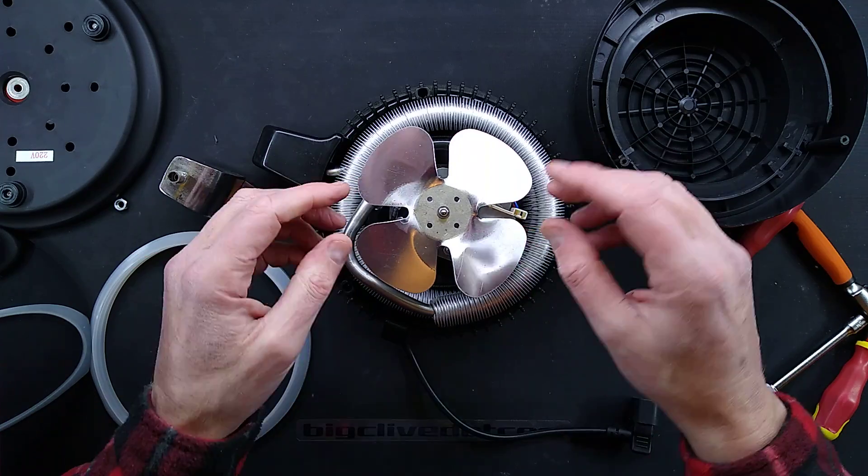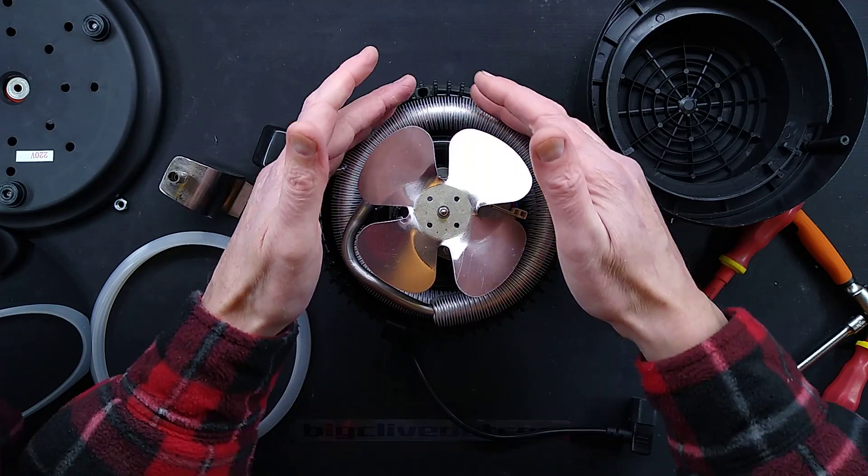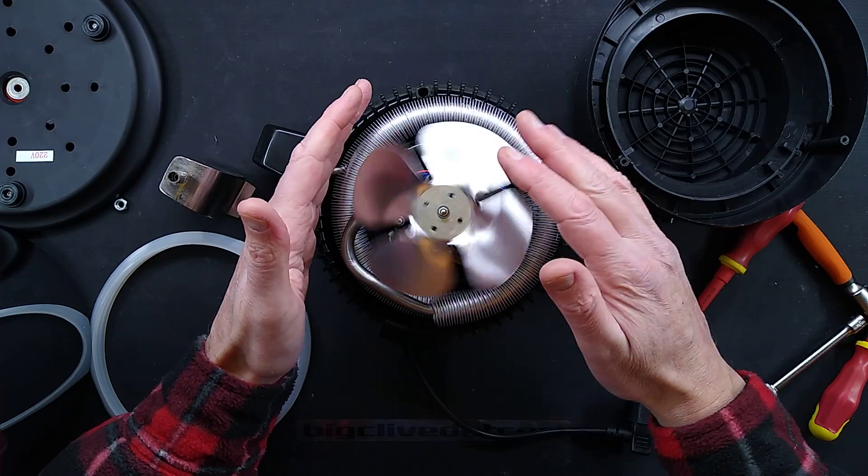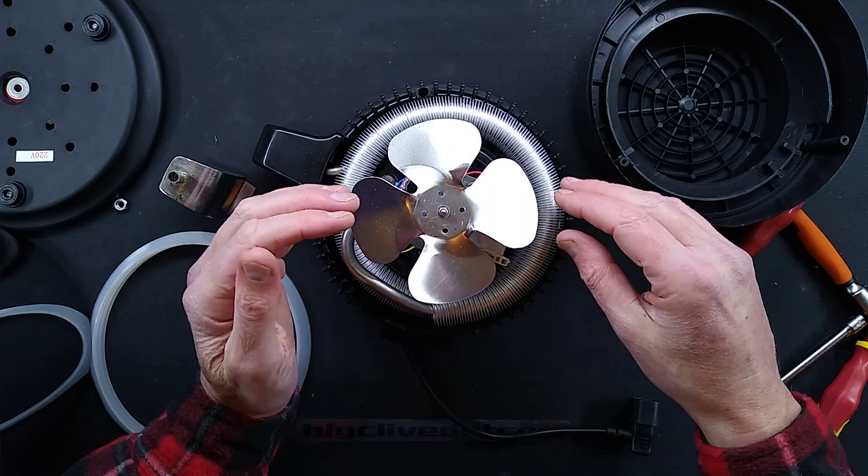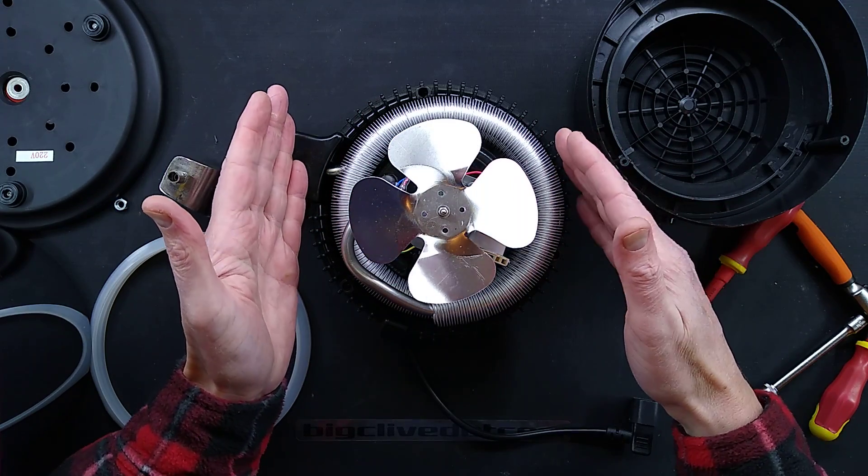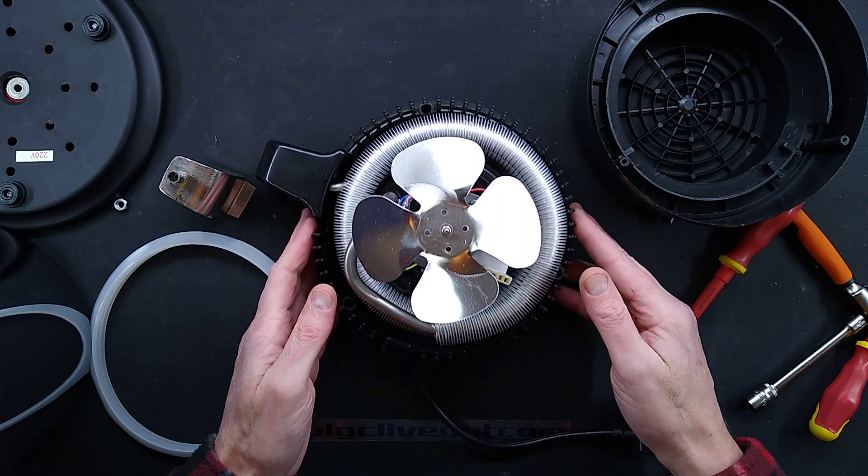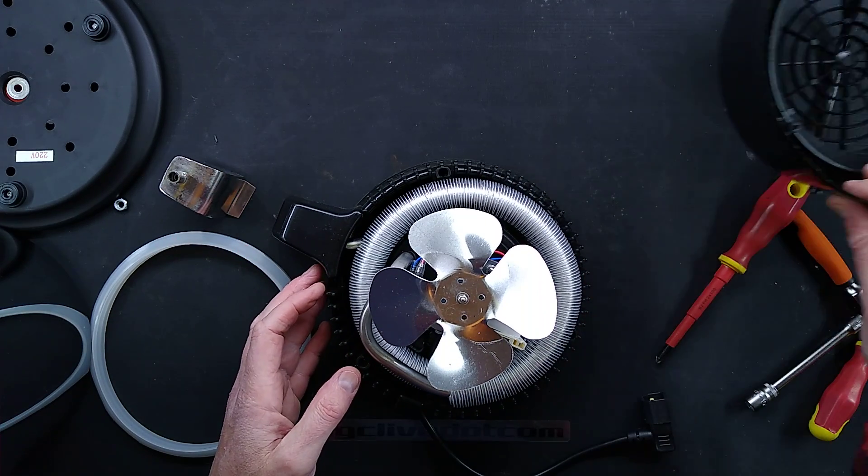But that is fundamentally it. The water boils, the steam goes up this tube, it gets cooled back down by this continually spinning fan blowing air through, it recondenses, and what drips out is the water with all the impurities left behind. That is fundamentally how a distiller works.